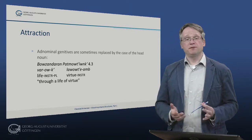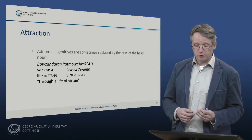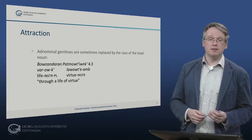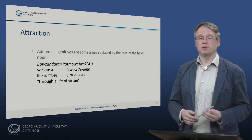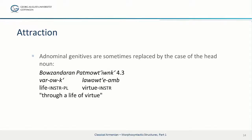Another interesting feature is that sometimes case attraction may occur, especially genitive attributes may sometimes be replaced by the case of the corresponding head noun. So have a look at this example from the Buzon Duran: varuk lavutiam, meaning 'through a life of virtue'. But actually what we find in the case marking is 'through a life and through virtue'. So here this looks like a case of case attraction between the two nouns.